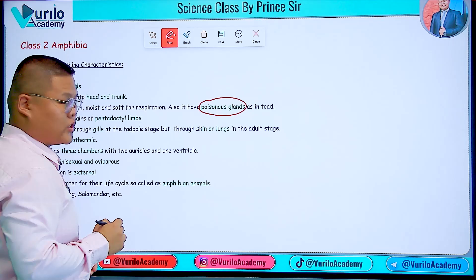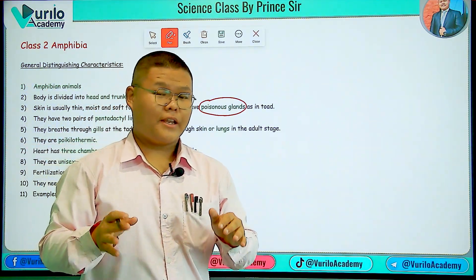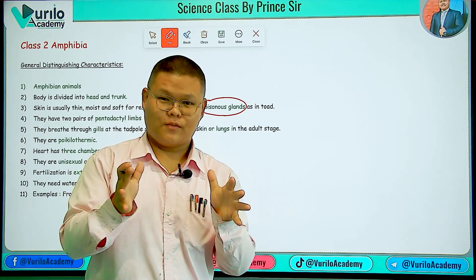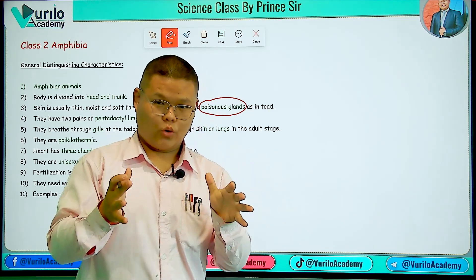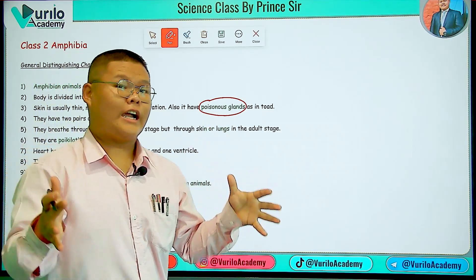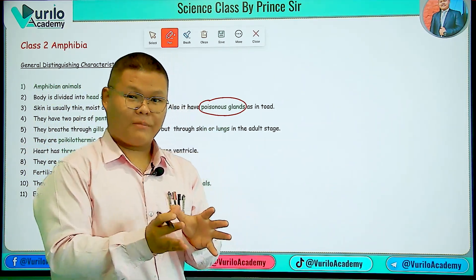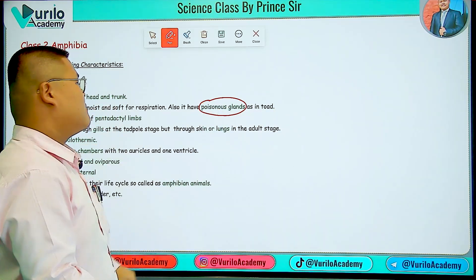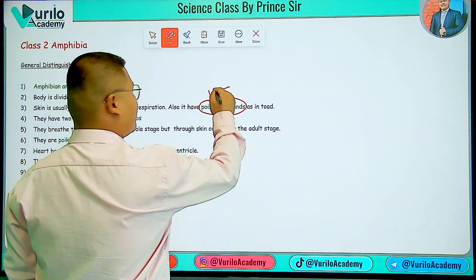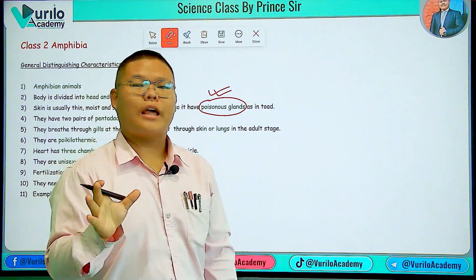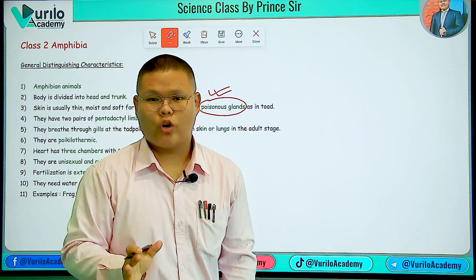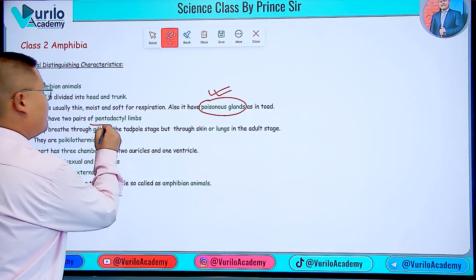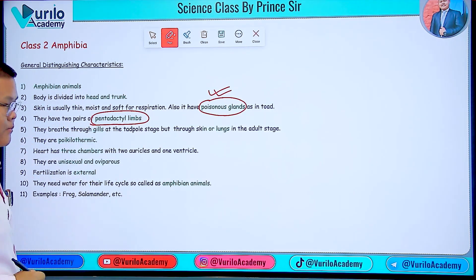In amphibians, poisonous glands are present in the skin. For example, in a toad — which looks like a frog — there are poisonous glands in their skin. This is your point to be noted. They also have pentadactyl limbs.